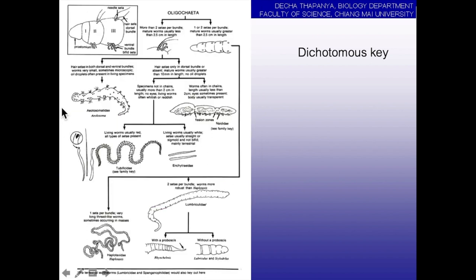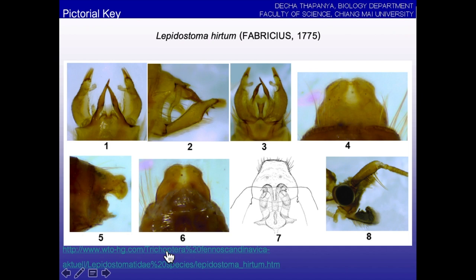This is also a dichotomous key at the genus level for Oligochaeta — some groups of earthworms and leeches. This is easier because it has both descriptions and pictures to point out the characters belonging to each genus of Oligochaeta. The second type of key is the pictorial key, very useful for identification of insects at the species level — like this picture of genitalia of the caddisfly Lepidostoma. We can compare the specimen to this picture.